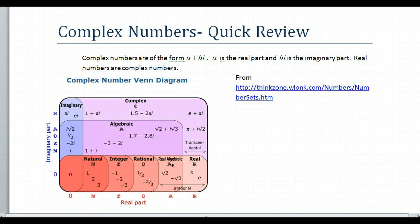Okay, so complex numbers are of the form A plus Bi. Bi is the imaginary part, A is the real part, and so all complex numbers will be of this form. In fact, all real numbers are of this form too, where B is equal to zero. So a real number is a complex number.